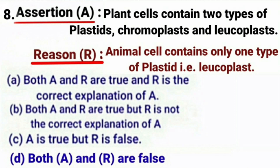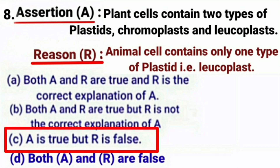Next question. Assertion: Plant cells contain two types of plastids — chromoplast and leucoplast. Reason: Animal cells contain only one type of plastid, i.e. leucoplast. The assertion is true — plant cells contain chromoplast, which is a colored plastid, and leucoplast, which is a colorless plastid. However, the statement of reason is false because plastids are absent in animal cells. So the correct answer is option C: assertion is true but reason is false.